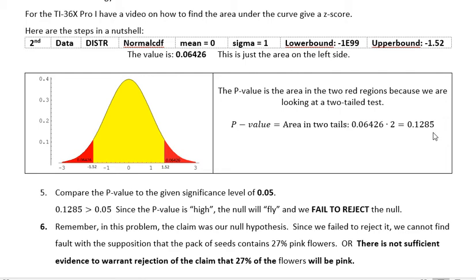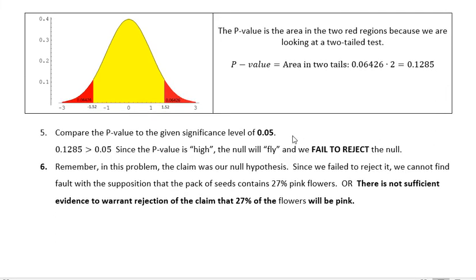Now we're supposed to compare that to the significance level we were given, which was 0.05. And we can see that 0.1285 is greater than 0.05. Since the p-value was high, the null will fly, and we will fail to reject the null.